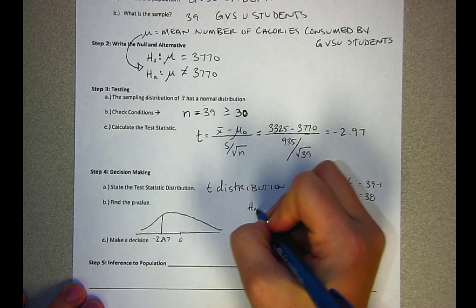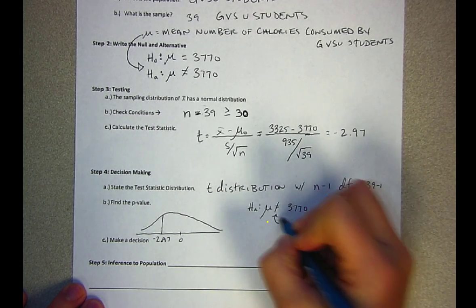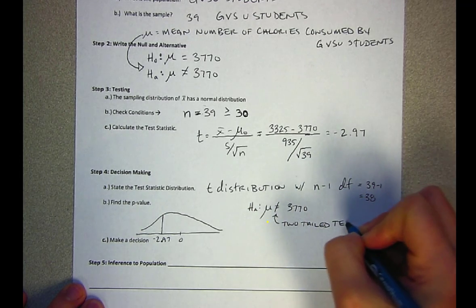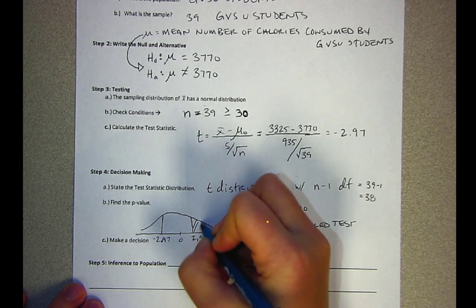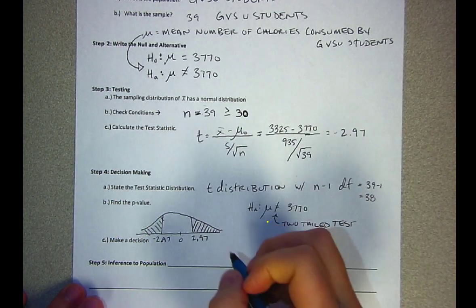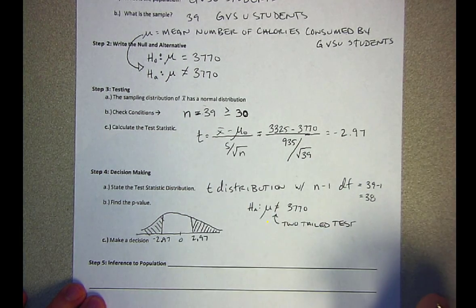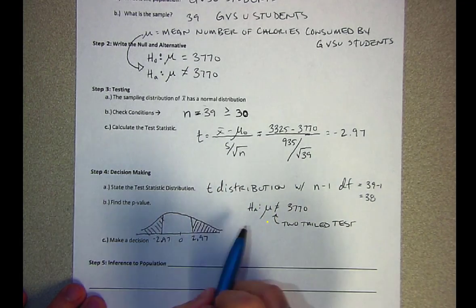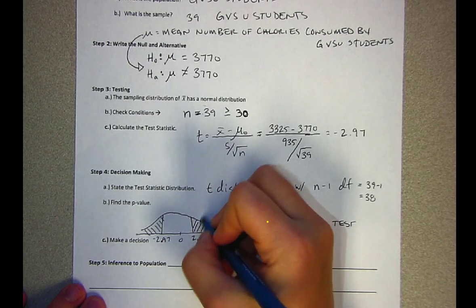When we look at our alternative, because it's a not equal to, this is called a two-tailed test. That means we're interested in the possibility of it being less than 3770 or greater than for it to not be 3770. So it could be less than or it could be greater than. We're interested in the area in both tails, hence it being called a two-tailed test.